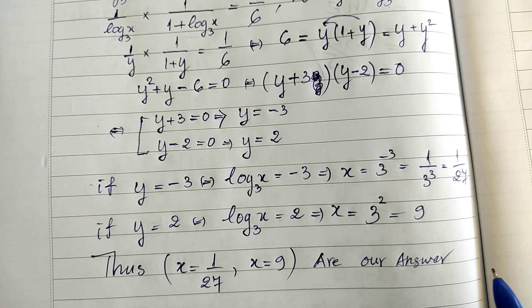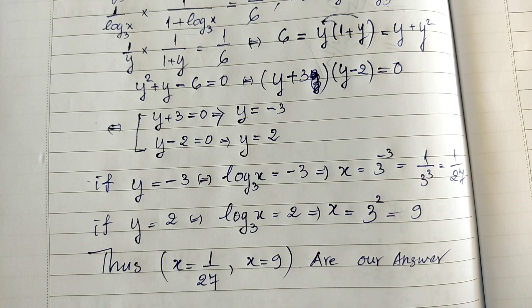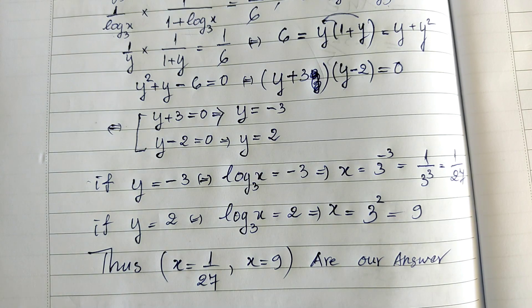So our final answers are h equals 1 divided by 27 and h equals 9. Thank you for watching. If you like my videos, please don't forget to subscribe to my channel for more exciting videos. Goodbye.